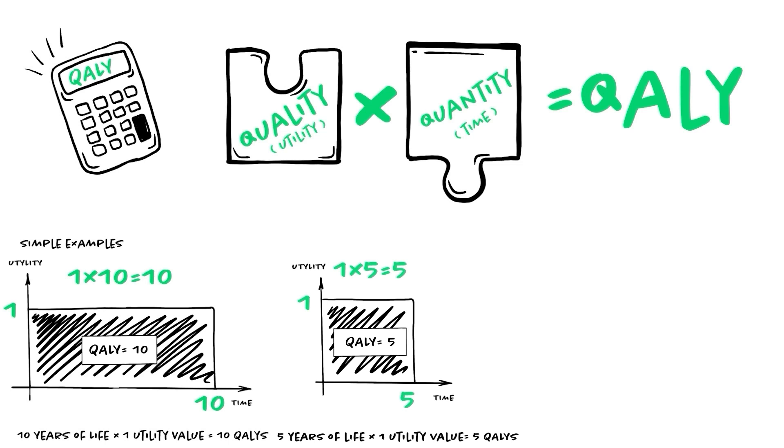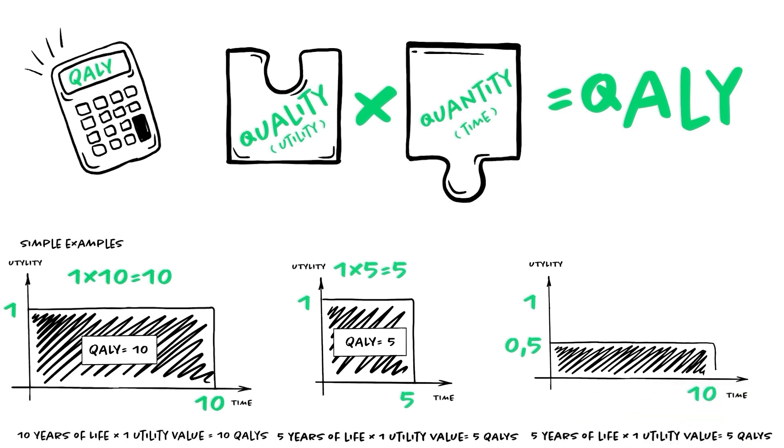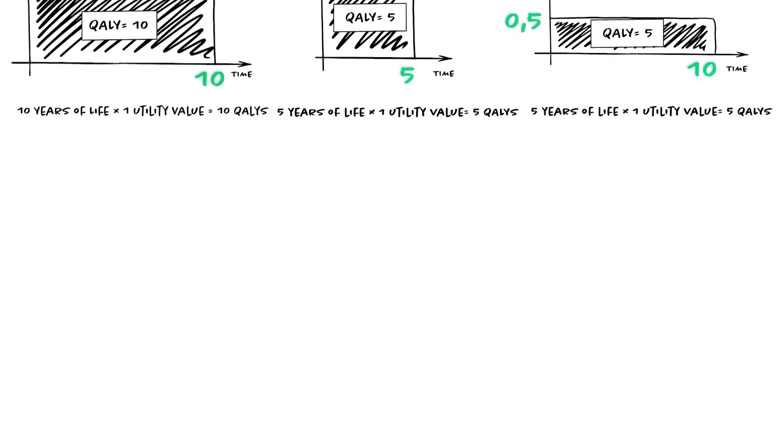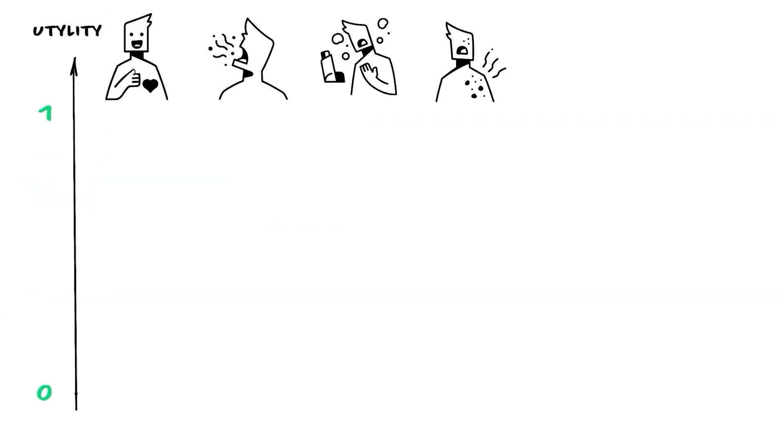And this would be the same for a person who lives in a health state with 0.5 utility, but for 10 years, right? Yes, that person would also have 5 QALYs, 10 years of life, times a utility value of 0.5, equals 5 QALYs. In reality, patients experience different health states over time, so we usually consider patient profiles, with sequences of utility values reported over periods of time.